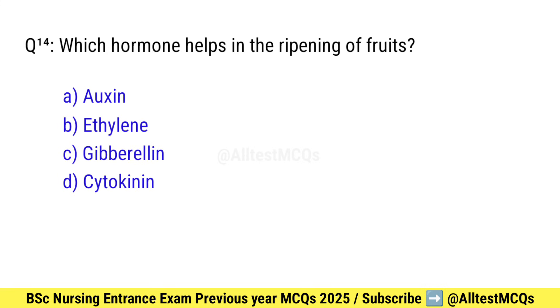Question number 14. Which hormone helps in the ripening of fruits? Right option is B: Ethylene.